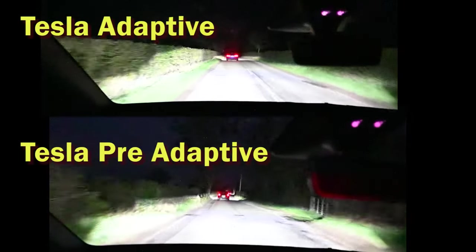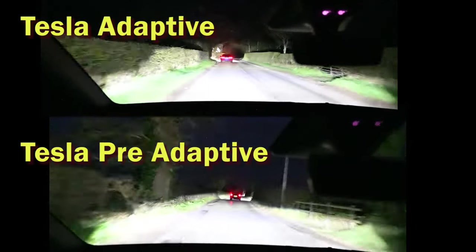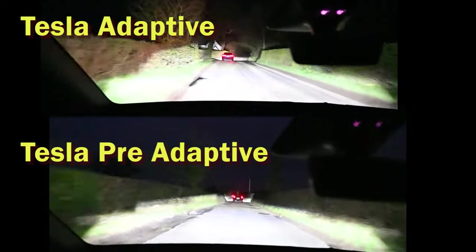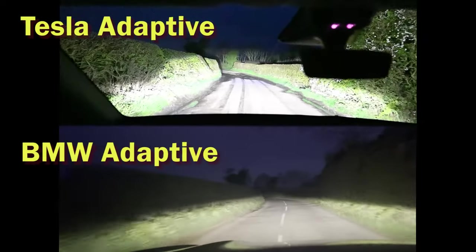So that's the end of the Tesla adaptive headlights compared to the pre-adaptive headlights. And we're now going to have a switch and compare them to BMW.